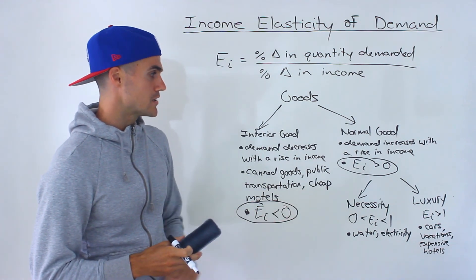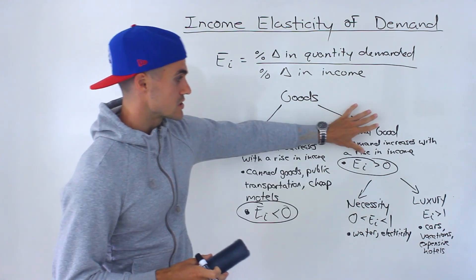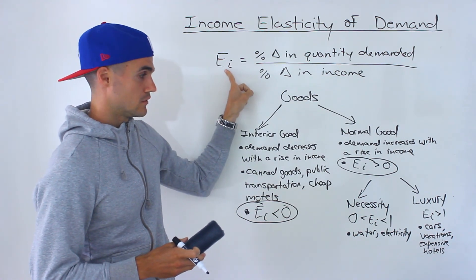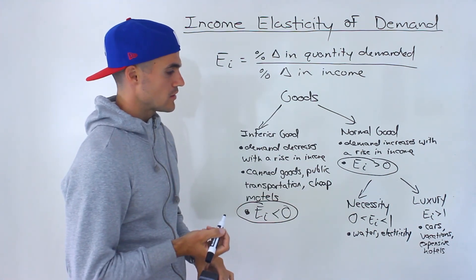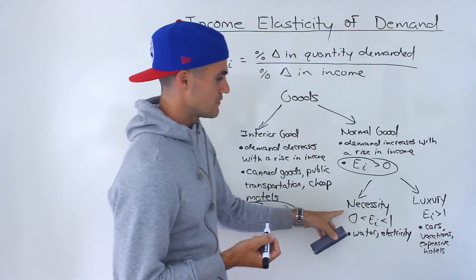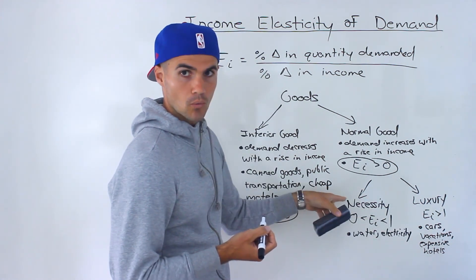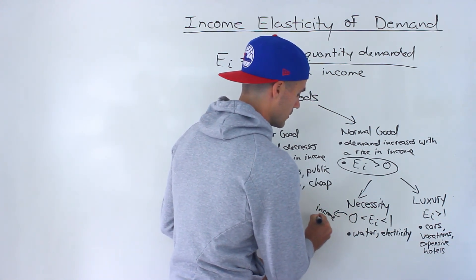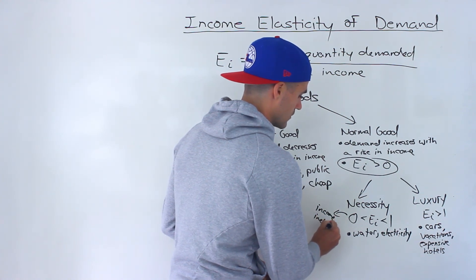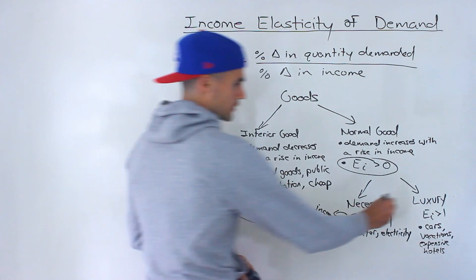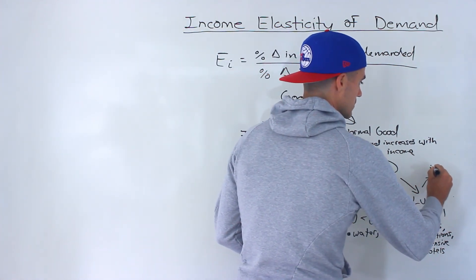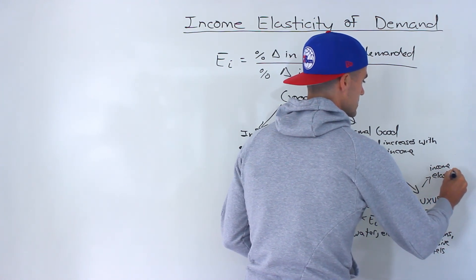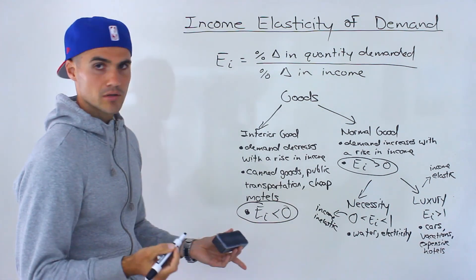If your textbook doesn't mention these subcategories, you can just classify any good with a positive coefficient as a normal good. Another term that may come up: if the income elasticity of demand is between zero and one, you may see that good called income inelastic, and goods with a coefficient greater than one may be called income elastic — just in case, thought I would mention.